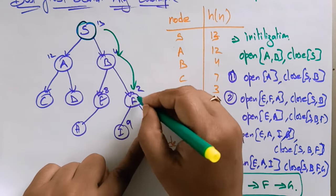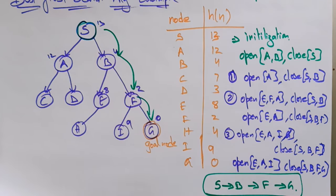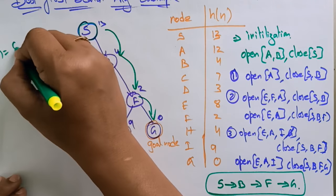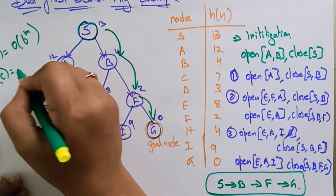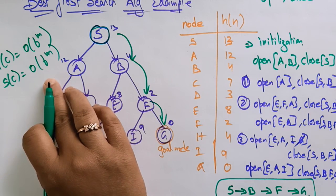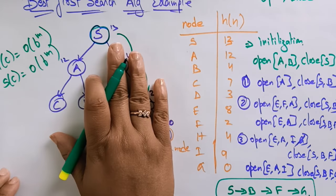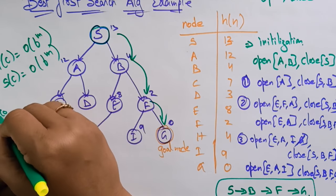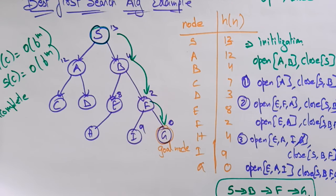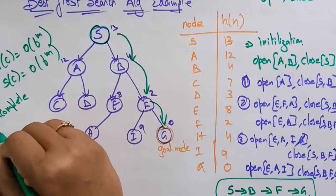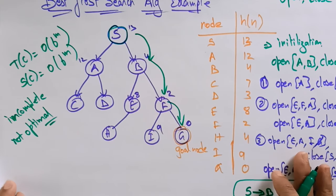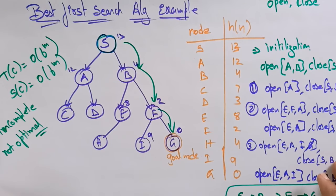The time complexity in the worst case is O(b^m), and the space complexity is also O(b^m), where m is the maximum depth of the search space. Best First Search is incomplete — even if the given state space is finite, it may not find a solution. Because it is incomplete, it is also not optimal. I hope you understand the example — thank you.